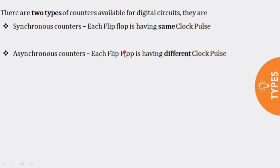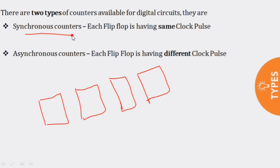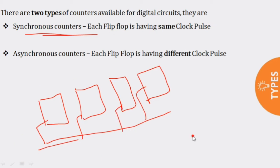We are going to discuss two types of counters: synchronous counters and asynchronous counters. In synchronous counters, each flip-flop receives the same clock pulse — the same clock is applied to all flip-flops. In asynchronous counters, each flip-flop has a different clock pulse. We will see how this works in the next slides.